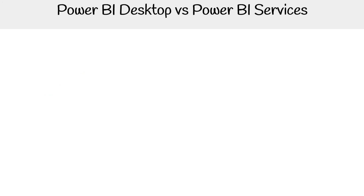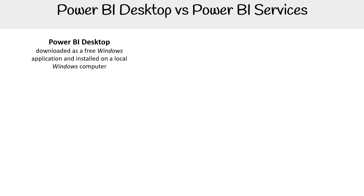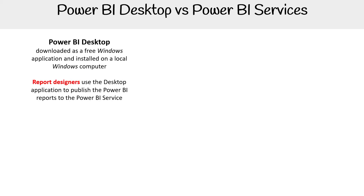To compare the two most important services — Desktop and Service — since they're easy to get mixed up: Power BI Desktop is a downloadable, free Windows application installed on a local Windows computer. If you're on a Mac or Linux, you cannot use it. The role you'd be in is a report designer, and you'd use the desktop application to publish Power BI reports to the Power BI Service.